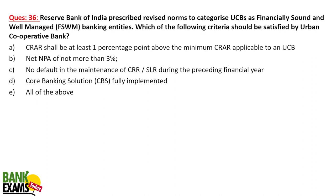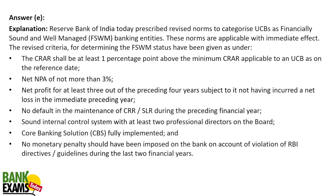RBI has prescribed revised norms to categorize UCBs as financially sound and well-managed banking entities. The criteria include: CRAR should be at least 1 percentage point above the minimum CRAR requirement, net NPA of not more than 3%, no default in maintaining CRR or SLR during the preceding financial year, CBS fully implemented, net profit for at least 3 out of 4 preceding years, no loss in the immediate preceding year, sound internal control system with at least 2 professional directors, and no monetary penalty imposed by RBI in the last two financial years.